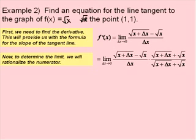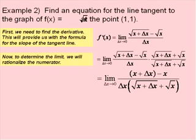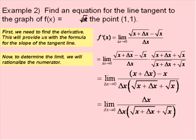Evaluating the limit, f of x plus delta x is the square root of x plus delta x, minus f of x, all over delta x. To simplify this limit, we need to rationalize the numerator by multiplying both the numerator and denominator by the conjugate of the numerator — that's the numerator with the sign changed to a positive. This leaves us with the limit as delta x approaches 0 of x plus delta x minus x, all divided by delta x times the quantity square root of x plus delta x plus square root of x.